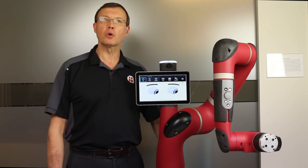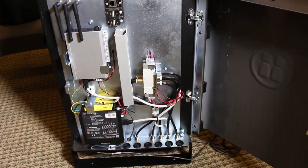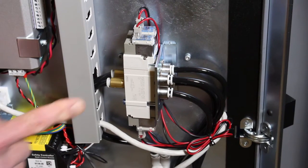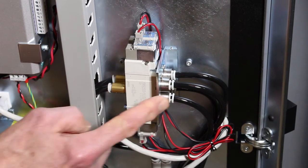Now, open the door on Sawyer's controller to access the air valves. Two valves are mounted, wired, and plumbed. This is the input side of the valves and this is the output side.